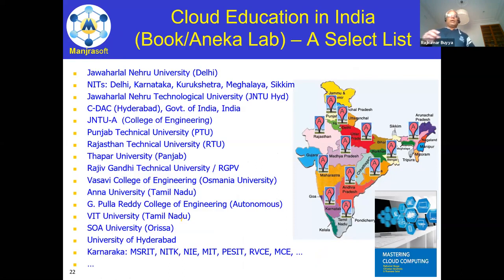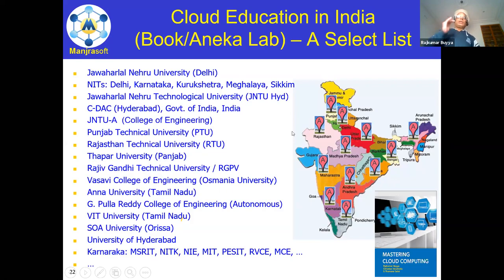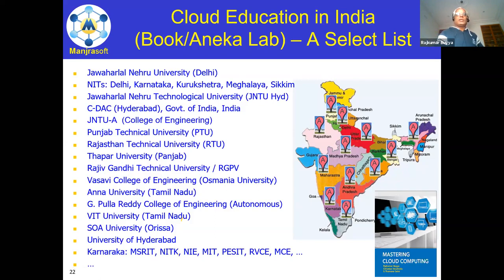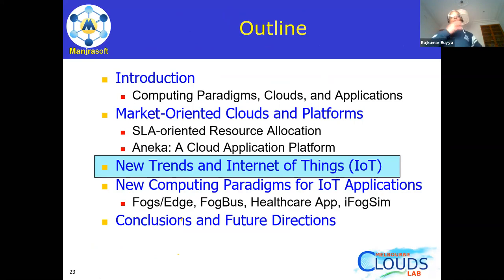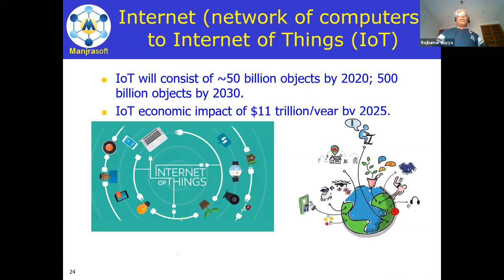Now let's look at IoT — Internet of Things — and why it became important. Internet started as networks of computers, and that concept has moved to networks of everything. Things can be roads, cameras at home, or a smartwatch that monitors heartbeat data. When we have these things connected, we can create interesting applications: smart healthcare, smart agriculture, smart transport, smart cities — everything smart.